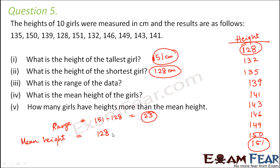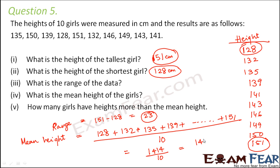That is 128 plus 132 plus 135 plus 139 plus so on till 151. So you add all these values and divide by how many? Divide by 10 because these are the heights of 10 girls, so you have 10 such values. So this comes out to be 1414 divided by 10, which is equal to 141.4 centimeters. So this is the mean height of the girls.